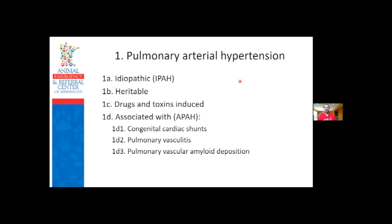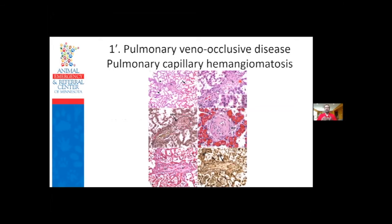Pulmonary vasculitis and pulmonary vascular amyloid deposition have been documented in people. Pulmonary veno-occlusive disease or pulmonary capillary hemangiomatosis consists of severe, widely distributed veno-occlusive remodeling affecting post-capillary venules and small veins, with smooth muscle cell proliferation and occlusion of lumens of microscopic arterioles. It's on a microscopic level - unless we're doing biopsies or histopath, this may be something we're missing and potentially underdiagnosing.